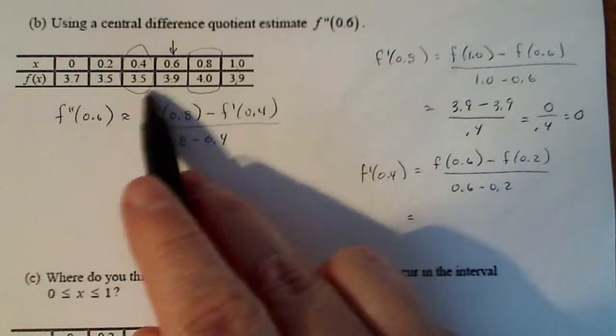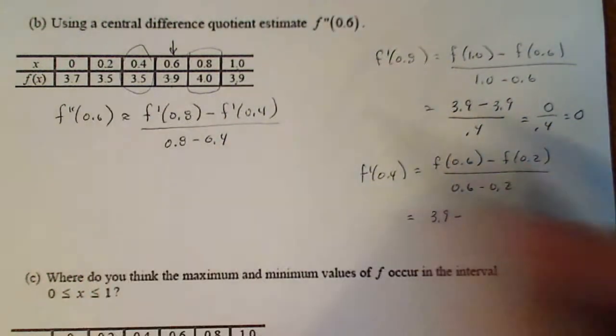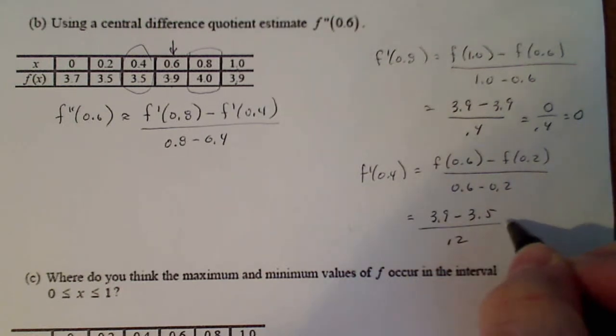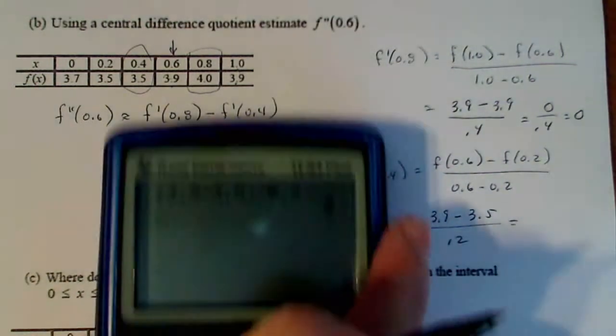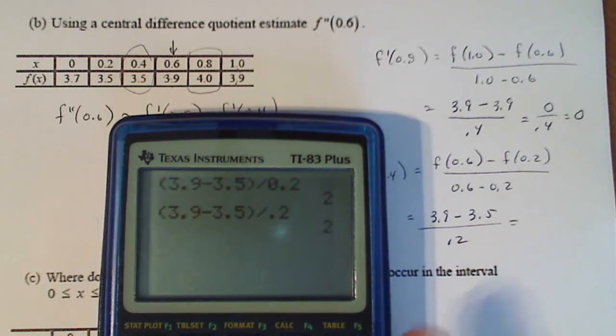And then here, that's 3.9 minus 3.5 divided by 0.2. Let's see what that turns out to be. 3.9 minus 3.5 divided by 0.2 gives me 2 again.